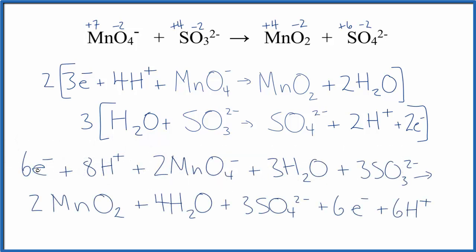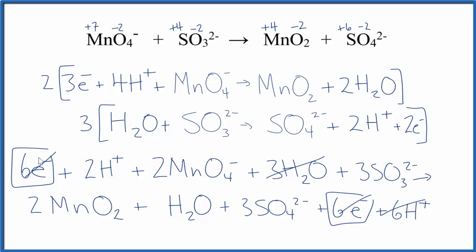So now we can simplify. We have six electrons here and then in the products. We can get rid of those. We have eight hydrogen ions and six here. Let's get rid of these and make this two. Then we have three water here and four here. So let's get rid of this. And this will just be one water and we won't write the one. And that's it. This is our balanced redox reaction. Let me clean it up a little bit.